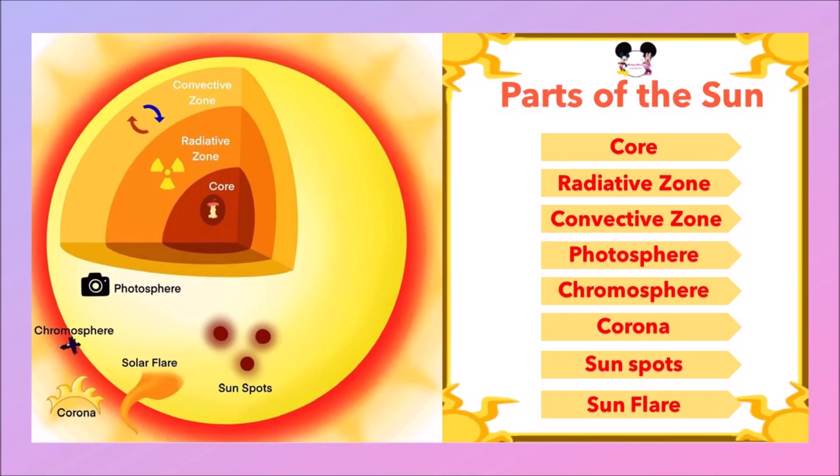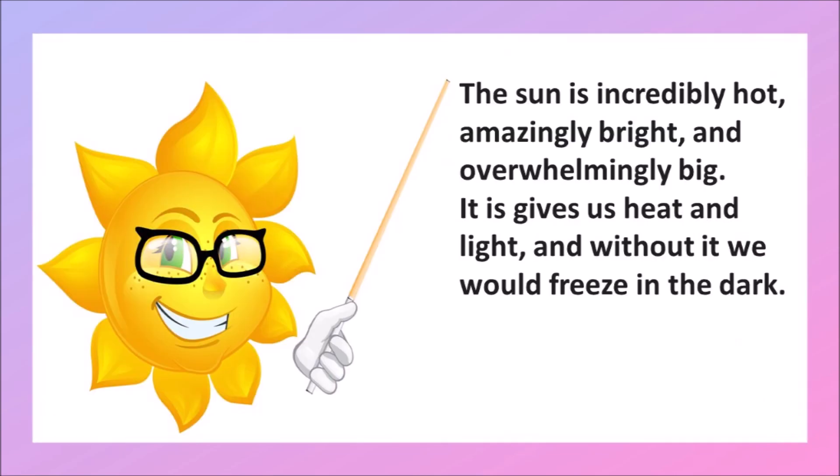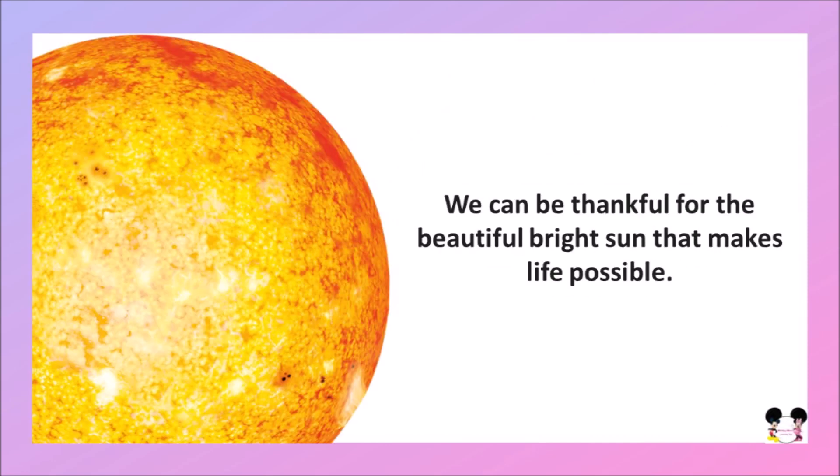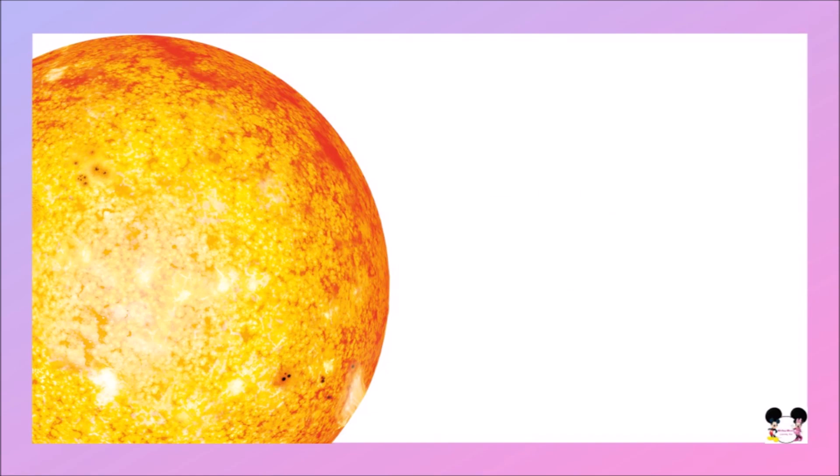Okay children, these are the parts of the Sun. The Sun is incredibly hot, amazingly bright, and overwhelmingly big. It gives us heat and light, and without it we would freeze in the dark. We can be thankful for the beautiful bright Sun that makes life possible.